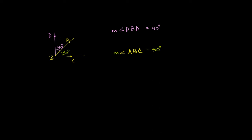So there's a bunch of interesting things happening here. The first interesting thing is that both of these angles share a side. If you view these as rays, they both share ray BA. And when you have two angles like this that share the same side, these are called adjacent angles, because the word adjacent literally means next to.